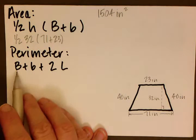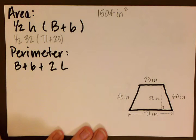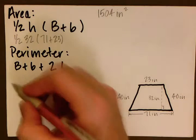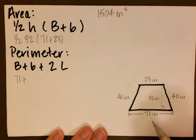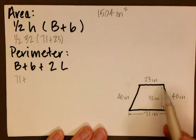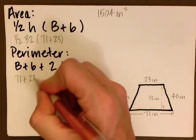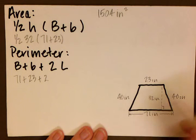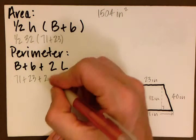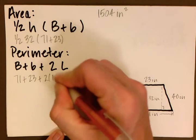So the perimeter, we have our uppercase B, which is our larger base, which is 71. Plus we have our lowercase b, which is our smaller base, which is 23. We're going to add two of the lengths here. Remember our lengths are our equal side legs, they're both 40. So we're going to multiply two times 40.